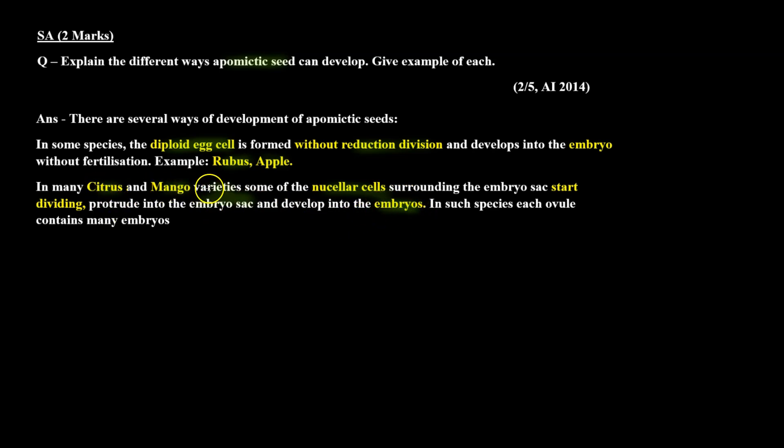There are several ways of development of apomyctic seeds. In some species, the diploid egg cell is formed without reduction division and develops into the embryo without fertilization. Examples include Rubus and Apple.